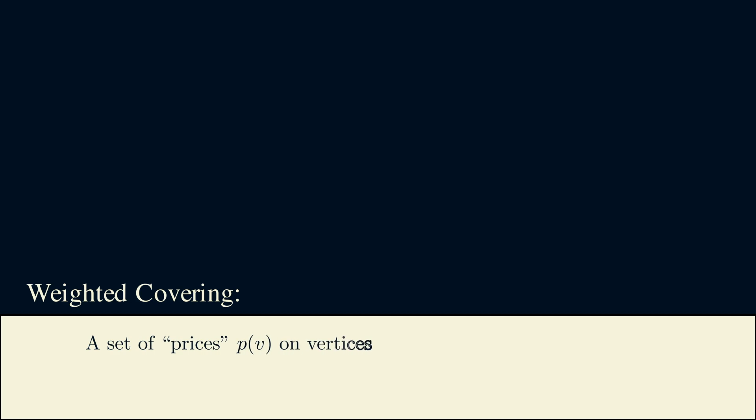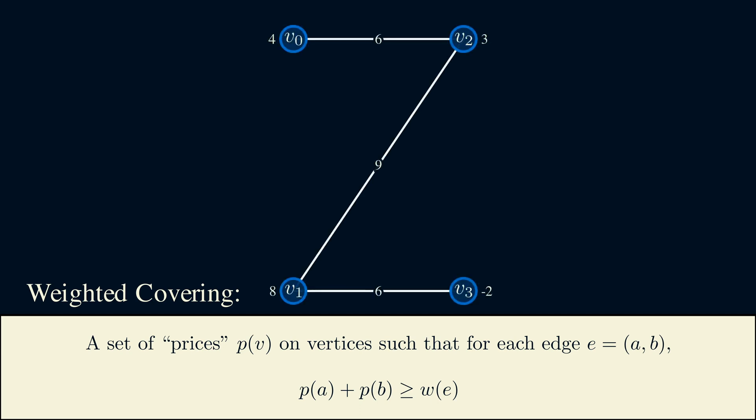Now, vertex cover generalizes to a problem, which I'll call weighted covering. Here, we assign numbers to vertices, and we call these numbers prices. For each edge, we want the prices of its endpoints to be at least the edge weight. Let's look at an example. The numbers next to the vertices are the prices. We can verify that for each edge, the sum of the prices of its endpoints is at least the weight of the edge. So this is a valid weighted covering. Note that these vertex prices can be negative.